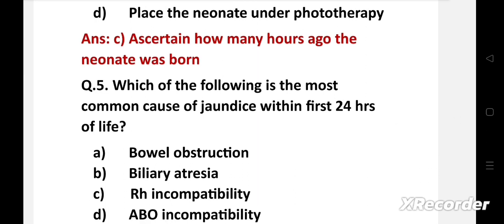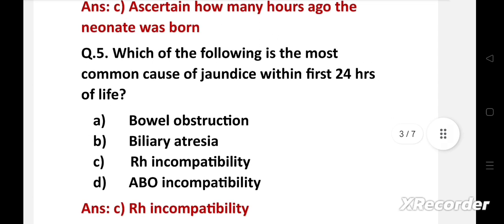Which of the following is the most common cause of jaundice within first 24 hours of life? Option A bowel obstruction, B biliary atresia, C Rh incompatibility, D ABO incompatibility. Right answer is option C, Rh incompatibility. Rh incompatibility is the most common cause of jaundice within first 24 hours of life.